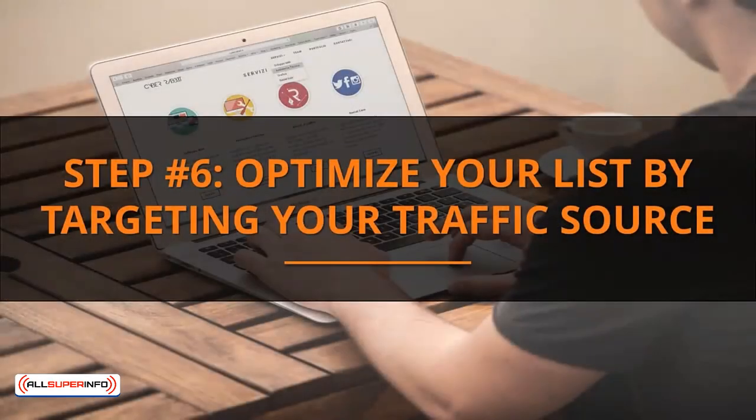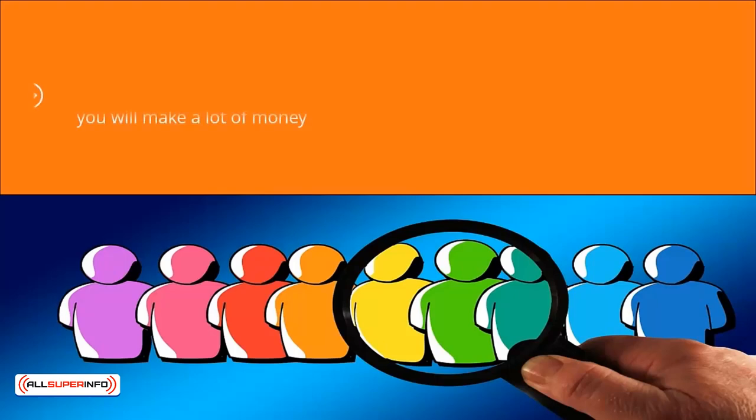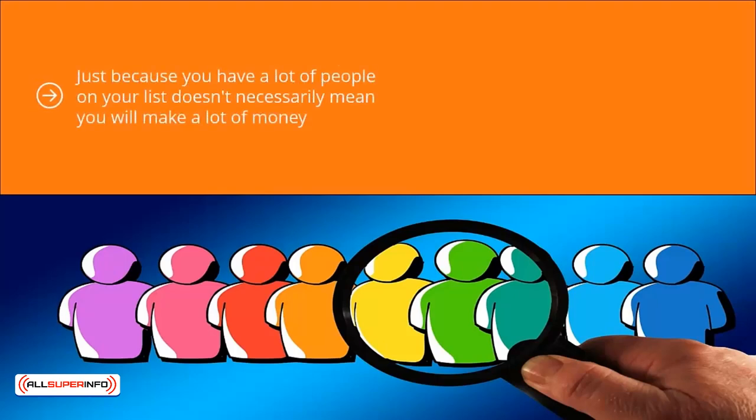Step number six: optimize your list by targeting your traffic source. Just because you have a lot of people on your list doesn't necessarily mean you will make a lot of money. There are a lot of list marketers with huge bloated lists but are struggling. The reason is that they made the all too common mistake of assuming that the more the merrier.